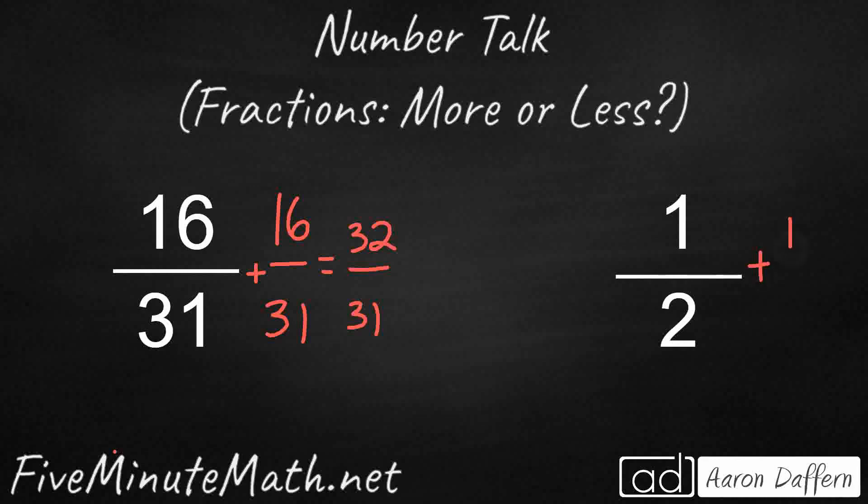And I know that if I double one half, I'm going to get exactly one, because that's exactly what happens when you get a half, and you double it, you get one. So, the fact that my 16/31 double gets a little bit more makes me think that it is going to be a little bit greater than one half.